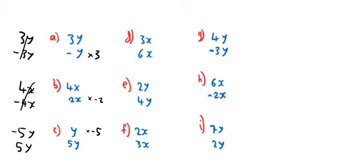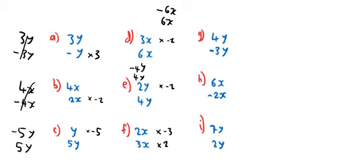D: I could multiply the top by minus 2, so I'd get minus 6x on top and 6x on the bottom. E: I'd have to multiply the top by minus 2 because both of them are positive again, so I'd get minus 4y on top and 4y on the bottom. The next one: you'd actually have to do things to both of them. You'd have to multiply the bottom one by 2 and the top one by minus 3. Then you'd get minus 6x on top and 6x on the bottom.